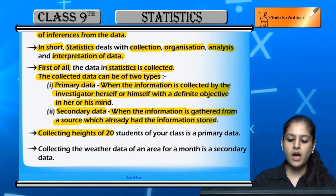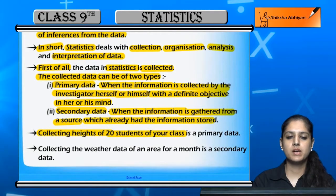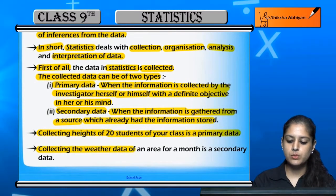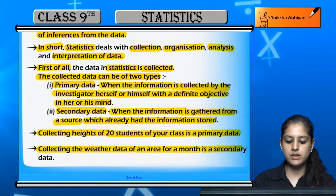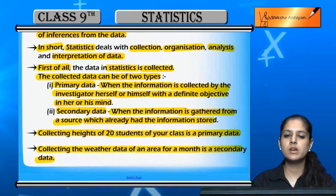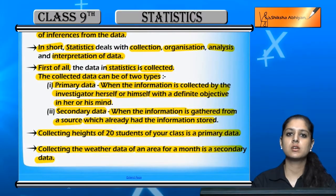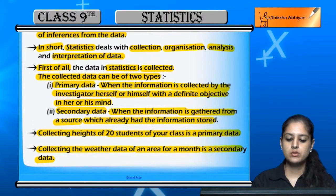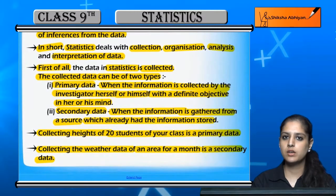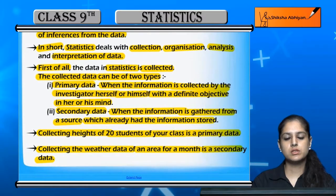For example, collecting the height of 20 students of your class — if I collect the height of 20 students of your class, I can do it directly. So this is primary data. And collecting the weather data of an area for a month is secondary data. If I want to collect the weather data for a month, I cannot do that on my own. I have to consult a source — I have to consult the weather department, which will have data collected every day. So I can further use that information.